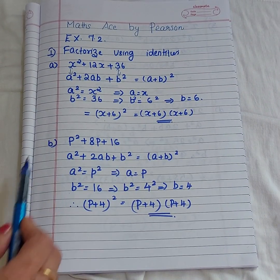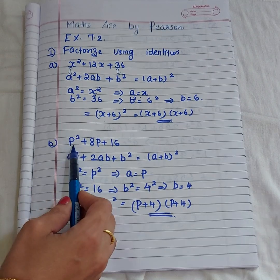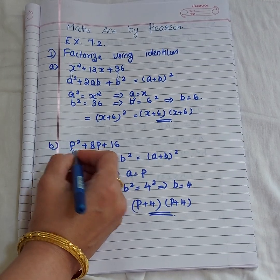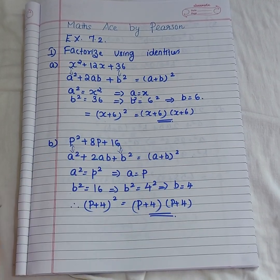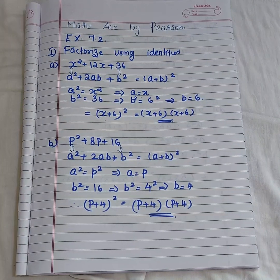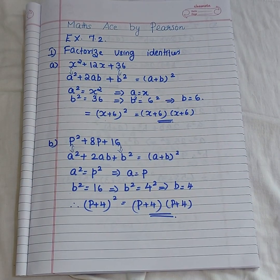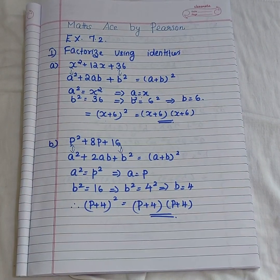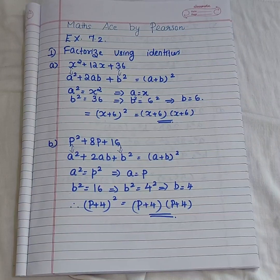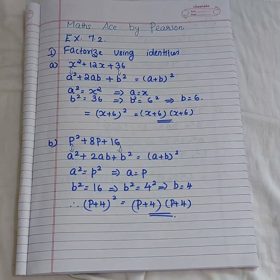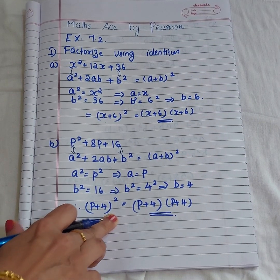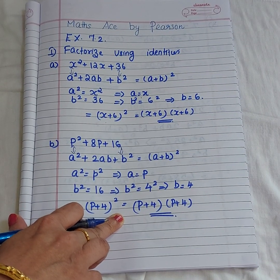Here we use the same identity because the first term and last term are perfect squares. Comparing: a² = p², so a = p; and b² = 16 = 4², so b = 4. Substituting, you get (p + 4)², which equals (p + 4)(p + 4).